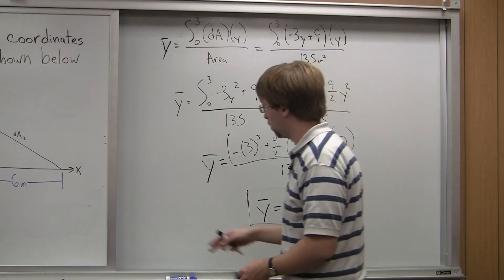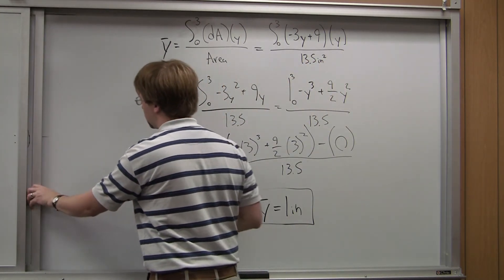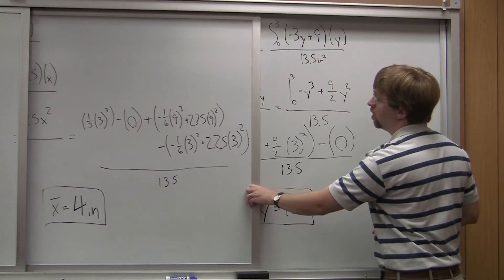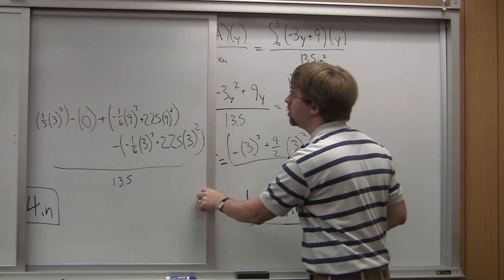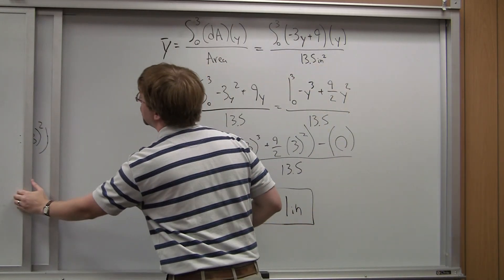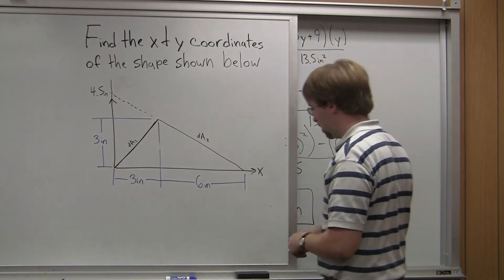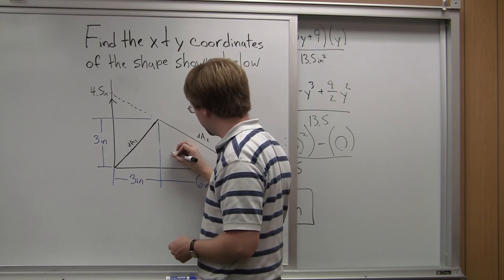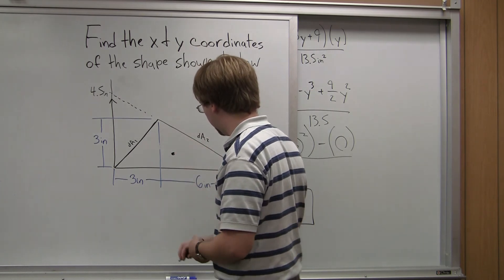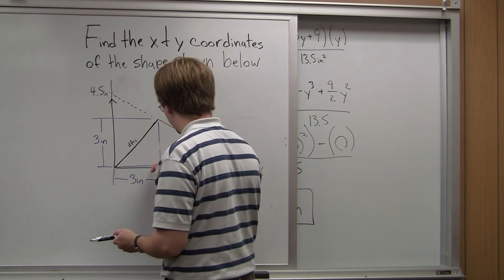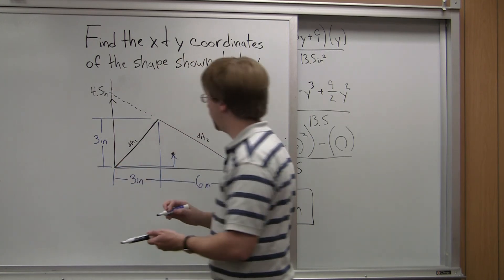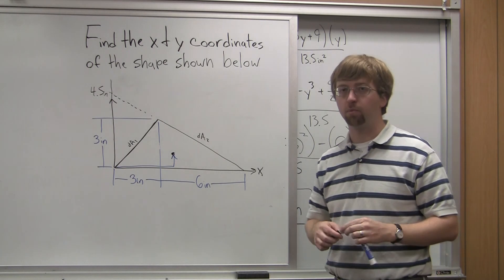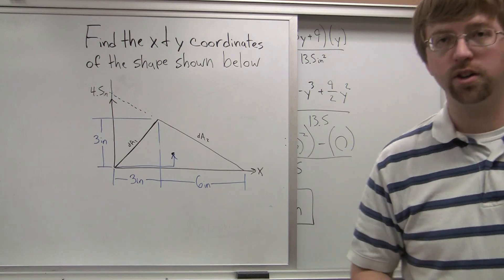We have our y-bar value. We've got x-bar of 4 inches and y-bar of 1 inch. Going back to our original diagram, that means our centroid is located 4 inches over and 1 inch up. That is going to be my centroid. We've found our centroid and solved our problem. Thank you for watching and I hope to see you again.